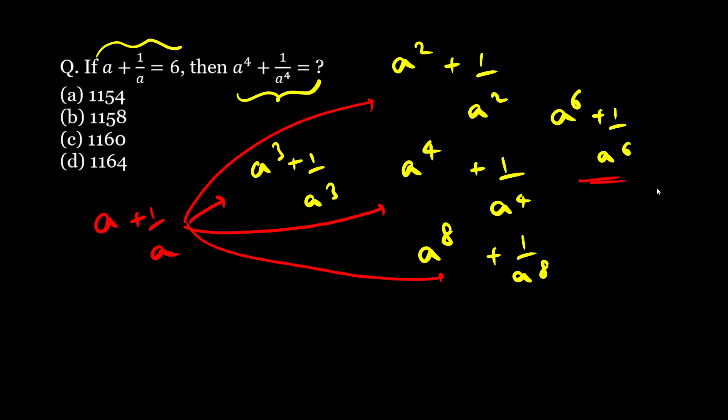So let us see how we can reach to fourth power. Now think of this, how can we reach fourth powers of a? Let's say if I square then I will reach a square. Now if I again square then I can reach a to the fourth. So I will need two iterations of squaring. So that would be our strategy here.